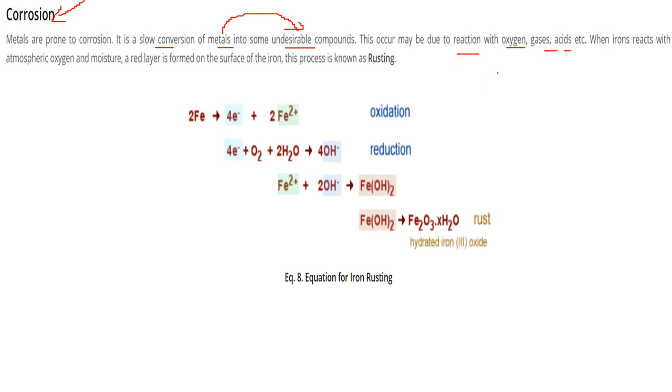When iron reacts with the atmosphere—that is, with oxygen and moisture—you will see a maroon or red layer on the surface of the iron. This is nothing but rusting.